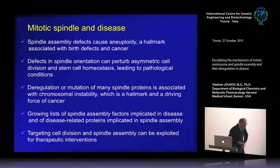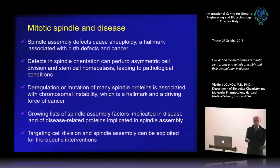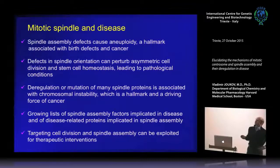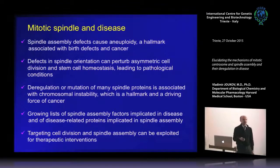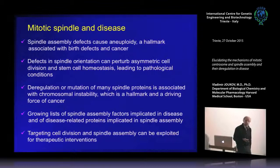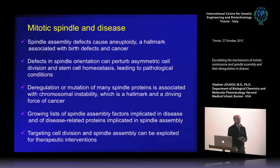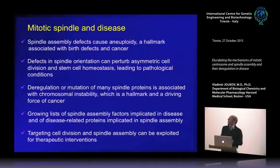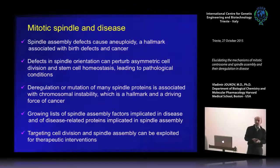As a physician scientist, my interest in spindle assembly stems from my interest in human disease. There are several aspects linking spindle assembly with human disease. First, spindle assembly defects cause aneuploidy, which is associated with birth defects and cancer. Second, defects in spindle orientation can perturb asymmetric cell division and stem cell homeostasis, contributing to disease. Third, deregulation of many spindle proteins is associated with chromosomal instability, a hallmark and driving force of cancer. There is also a growing list of disease-related proteins implicated in spindle assembly, and targeting cell division and spindle assembly can be exploited for therapeutic interventions.